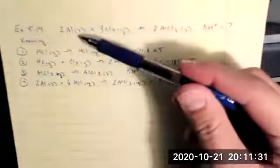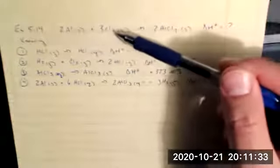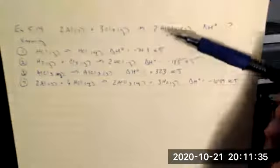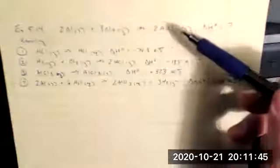We're asked to solve for the enthalpy for the reaction of two solid aluminums plus three gaseous chlorines going to form two aluminum trichloride solids, given four reactions to solve for this overall reaction.